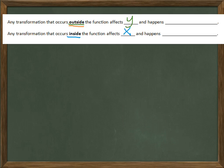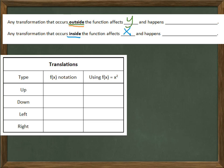Here's a twist on the main principle as we look at translations. Any transformation that affects y happens normally. But any transformation that affects x is going to happen backwards. You'll see the reason why as we do the investigation in class, so we're just going to run with it here. You'll figure out why x happens backwards.